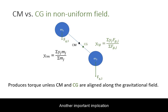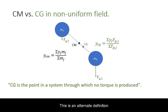Another important implication for the center of gravity in a non-uniform field is that it can produce a torque on an extended system. Notice that in the very formula for center of gravity, the top line is in fact a calculation of torque. This is an alternate definition for center of gravity.